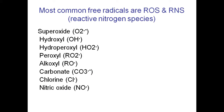The most common free radicals are reactive oxygen species and reactive nitrogen species. Reactive oxygen species include superoxide (O2•−), hydroxyl radical (OH•), and hydroperoxyl radical (HO2•), as well as carbonate (CO3•−) and chlorine radicals. Nitric oxide (NO) is a reactive nitrogen species. All others contain oxygen in their structure, which makes them free radicals.